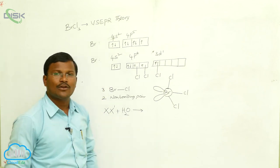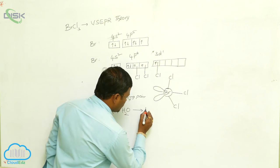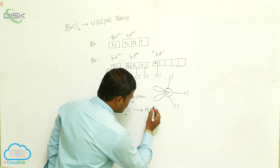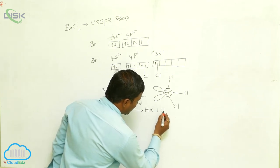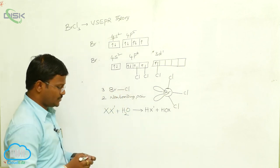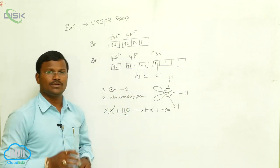they produce HX' plus HOX type compounds. This is characteristic of interhalogen compounds.